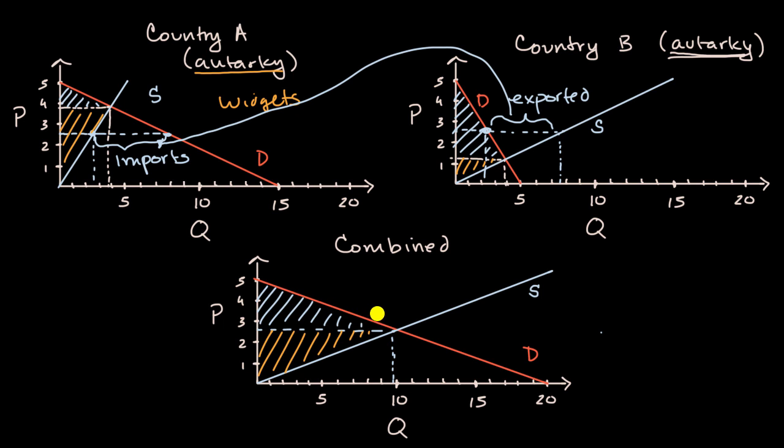There will not always be winners in this. The winners here are the demanders in Country A, because instead of this small consumer surplus that they had before, now they have this much larger consumer surplus. The other winners are the suppliers in Country B, because instead of this producer surplus that they had before, they now have this producer surplus. But the losers in this situation are the suppliers in Country A, who now have a much lower producer surplus. And the other losers are the consumers in Country B, who now have to pay a higher equilibrium price, so their consumer surplus is only this small triangle when before it was this whole thing.